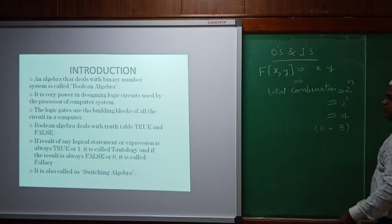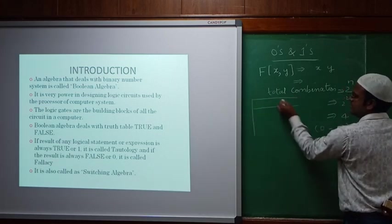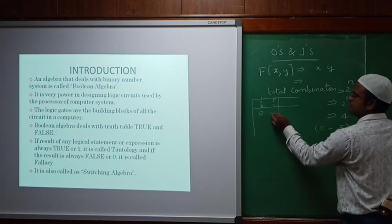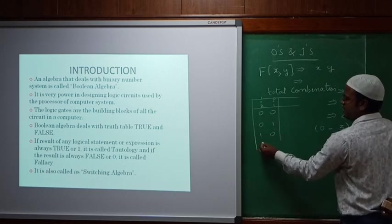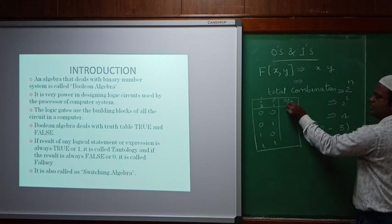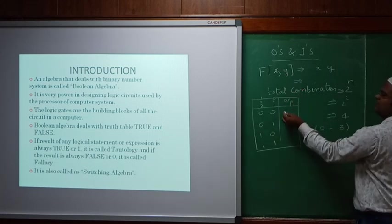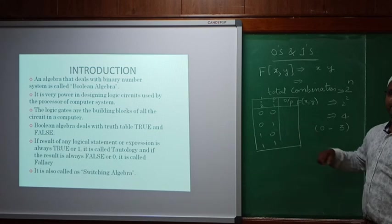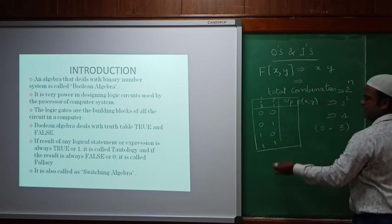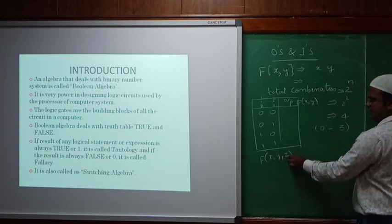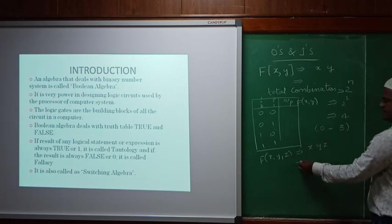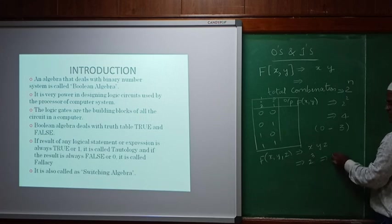To verify this, we take a table: 2 power 0 is 1, 2 power 1 is 2. The four combinations are: 0,0 — 0,1 — 1,0 — and 1,1. That is how we write the respective output. The output function is f(x, y). Similarly, if I have three inputs — f(x, y, z) — the total combination is 2 power 3, which is 8, ranging from 0 to 7.